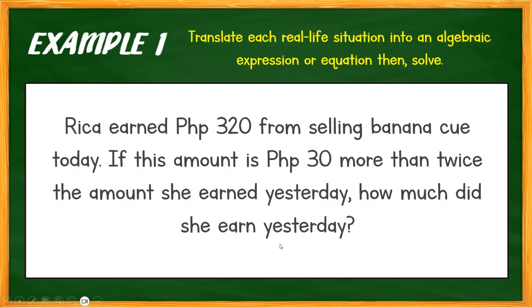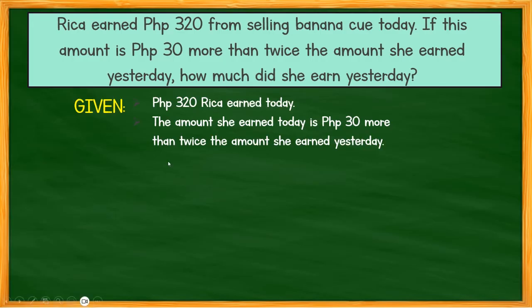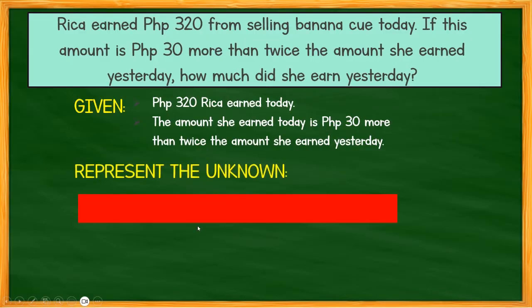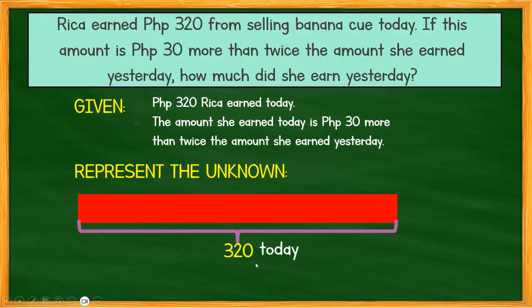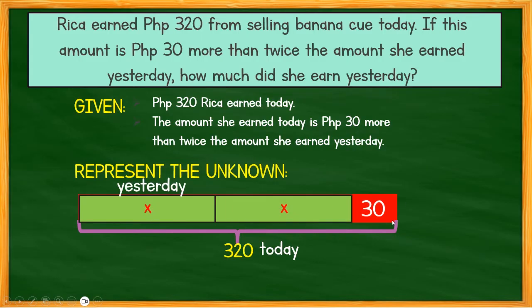Example number 2: 'Rika earned 320 pesos from selling banana cue today. If her amount today is 30 pesos more than twice the amount she earned yesterday, how much did she earn yesterday?' The given: Rika earned 320 pesos today. Let X represent her earnings yesterday, and X plus 30 represent her earnings today.